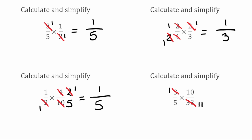Now looking across the other way, we've got 5 and 10. The highest common factor of 5 and 10 is 5, so I can divide both by 5. 5 divided by 5 gives 1, and 10 divided by 5 gives 2. So now I've simplified to 1 over 1 multiplied by 2 over 11. Multiplying through, we have 1 times 2, which is 2, and 1 times 11, which is 11. So this one fully simplified would be 2 elevenths.